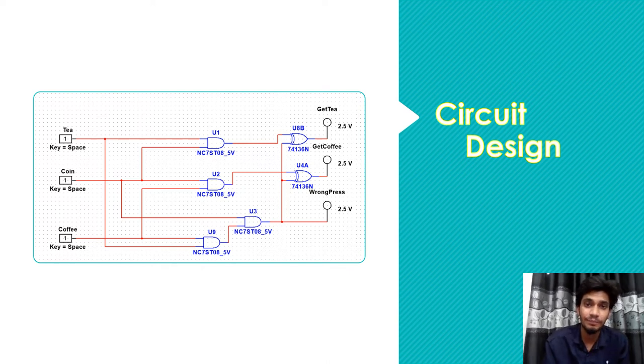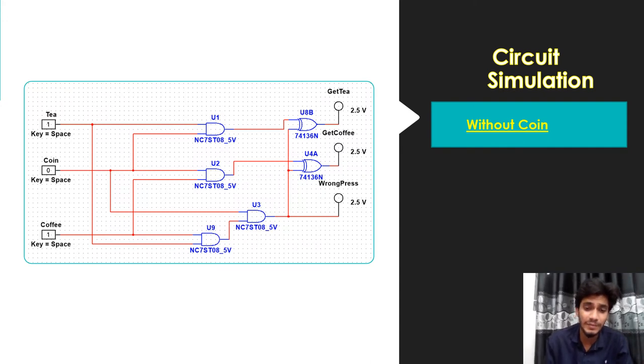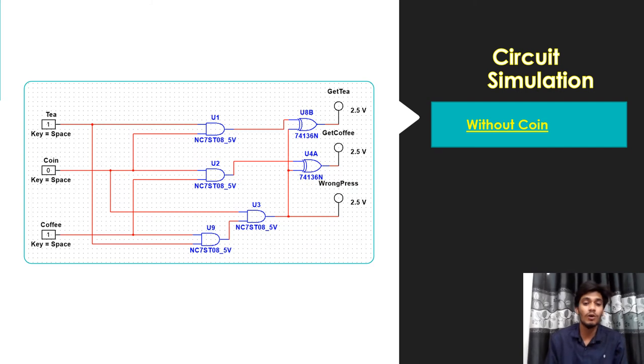In the next slide, when the coin doesn't insert, that means the coin input signal is zero, the circuit will not work and no output will show, because the coin input option is working in the machine as an enable input. As we know, when the enable input signal is zero, the output will always be zero. So when the coin input is zero, the machine will not give tea or coffee.